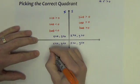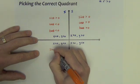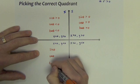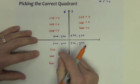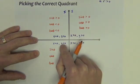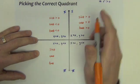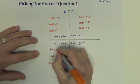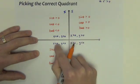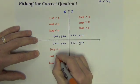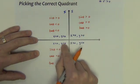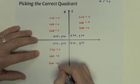In quadrant 3: sine is y divided by r — negative over positive — so that's negative. Cosine is x over r — negative over positive — that's negative. Tangent is y over x — negative over negative — that's positive.